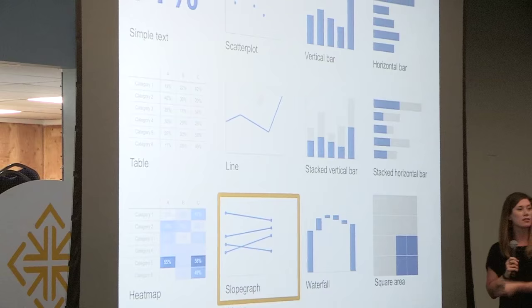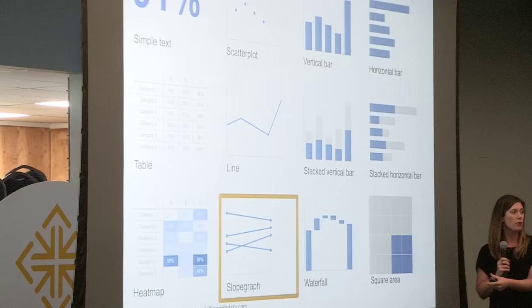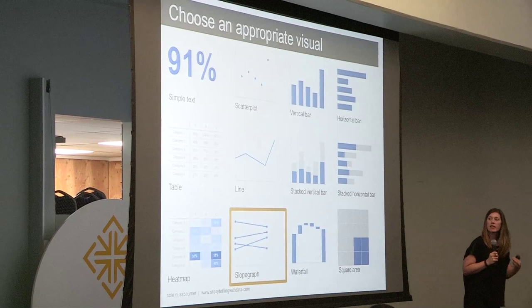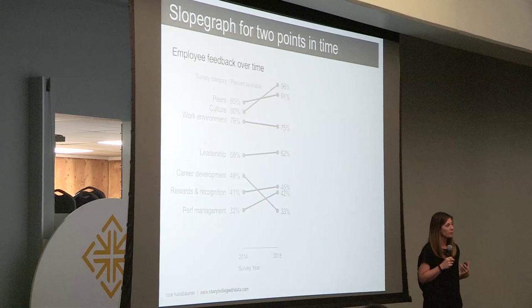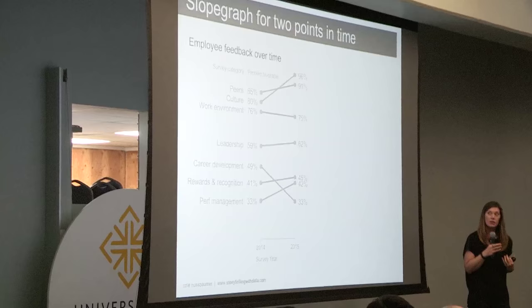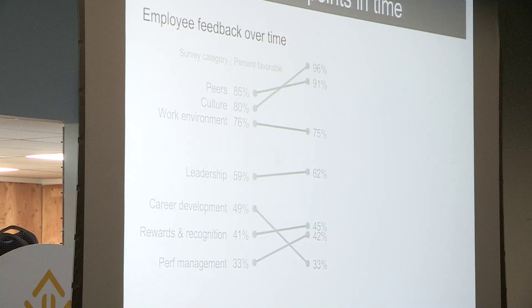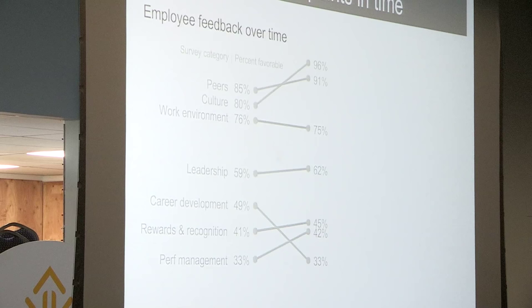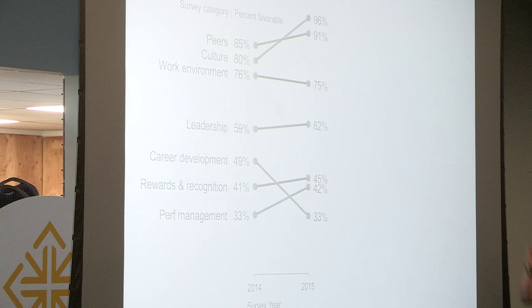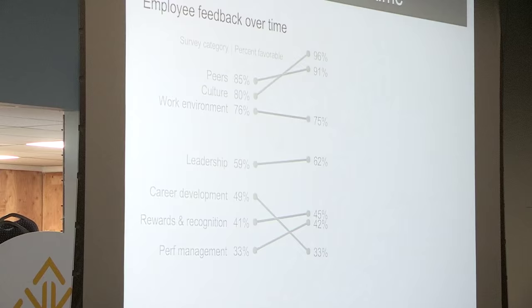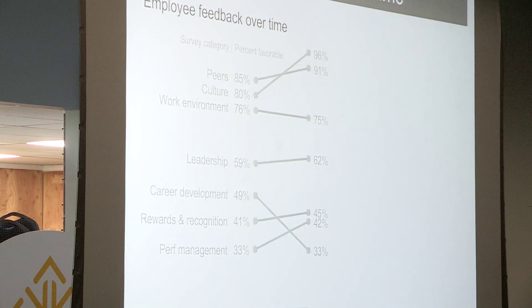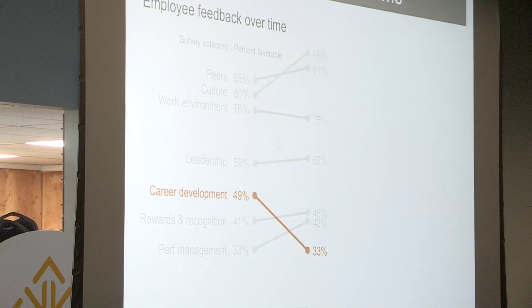A special case of the line graph is the slope graph. Slope graphs are great when you have just two points in time — they pack in a lot of information in a pretty intuitive way. For example, we have employee feedback summarized over 2014 and 2015. We can see the stacked ordering of how we did across various dimensions and the rate of change over time, which is implicit via the relative slopes of the lines. Whether a slope graph works depends on the layout of the data — if you have a lot of crisscrossing lines, they can get messy quickly.